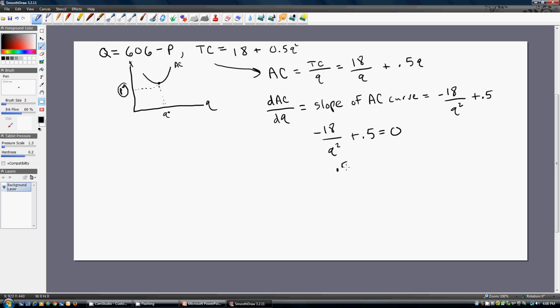We get 0.5q² = 18. Moving 0.5 over and multiplying through by q², the minuses cancel. Simplifying, we get q² = 36. Taking the square root of both sides, we find q = 6.